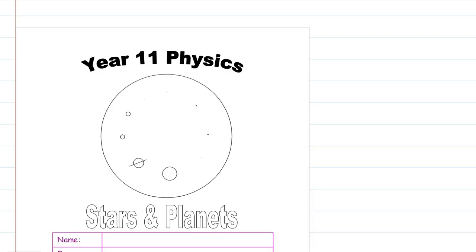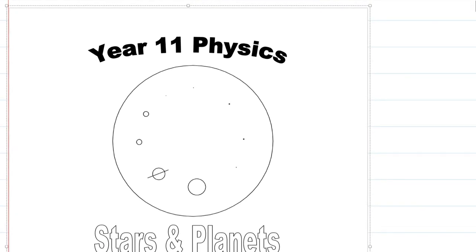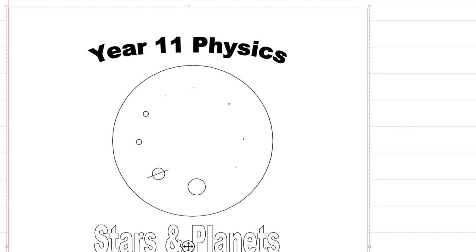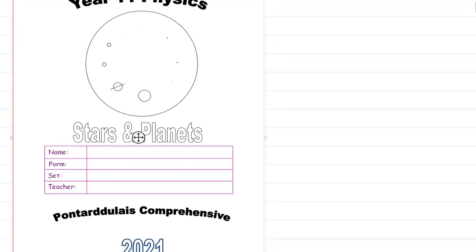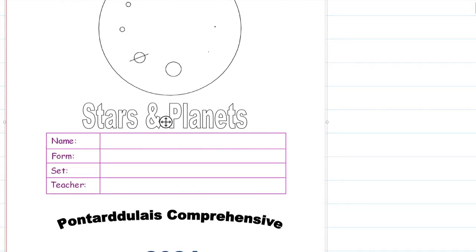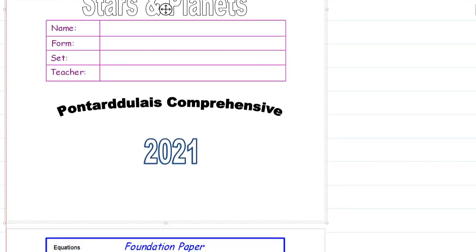Welcome back year 11, this is the start of the topic on stars and planets. This is what the front of your booklet would look like, so those of you home learning at the moment should have had this booklet delivered. You can write your name, form, set and teacher on the front.